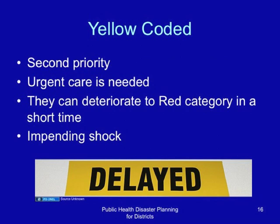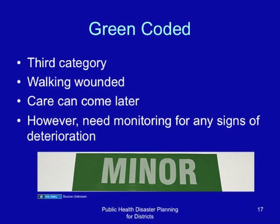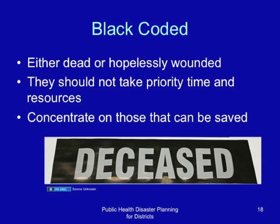The green coded are the third category and include all walking wounded. Care can come later; however, they need monitoring for any sign of deterioration. The black coded are either dead or hopelessly wounded. They should not take priority time and resources — concentrate on those that can be saved.